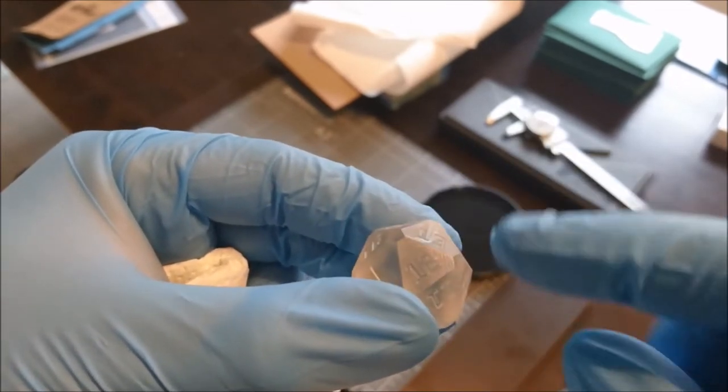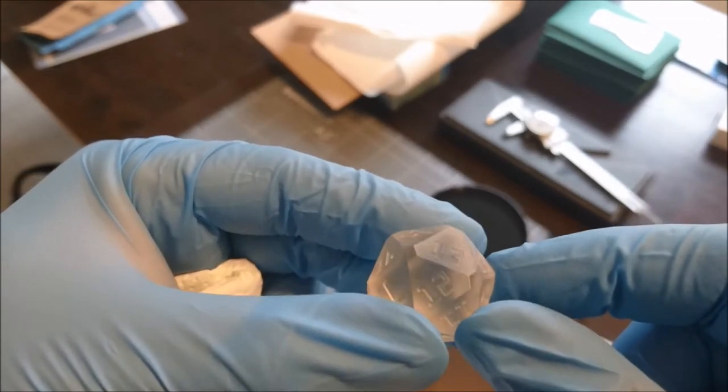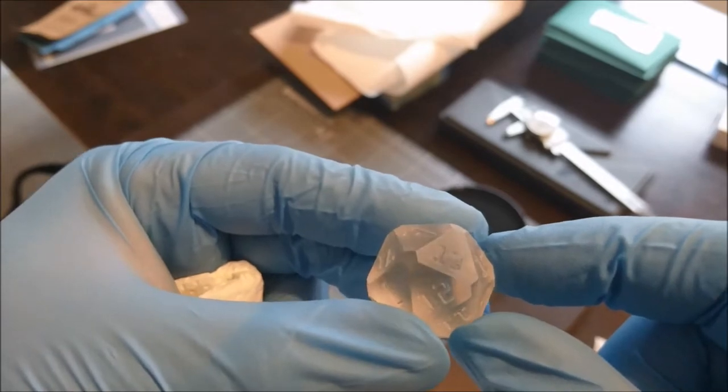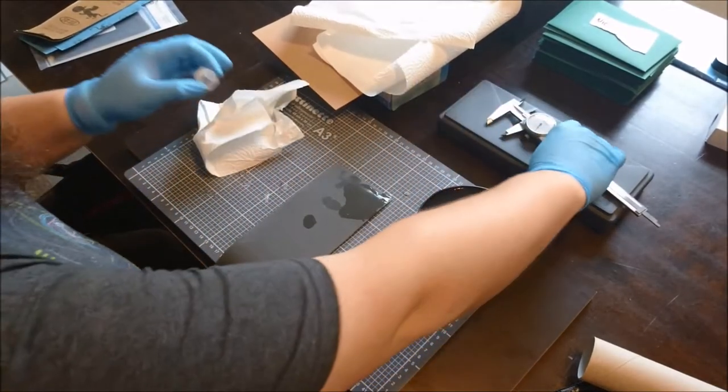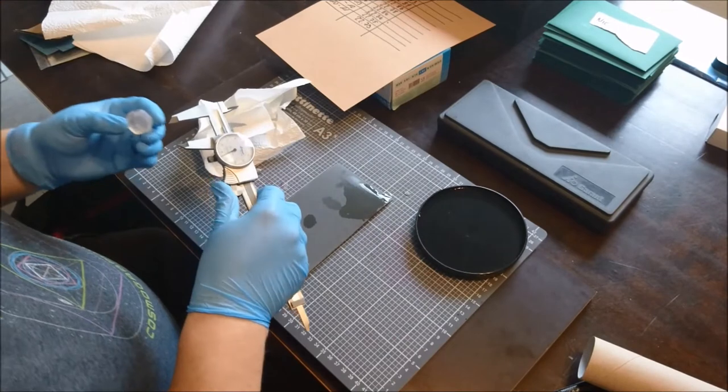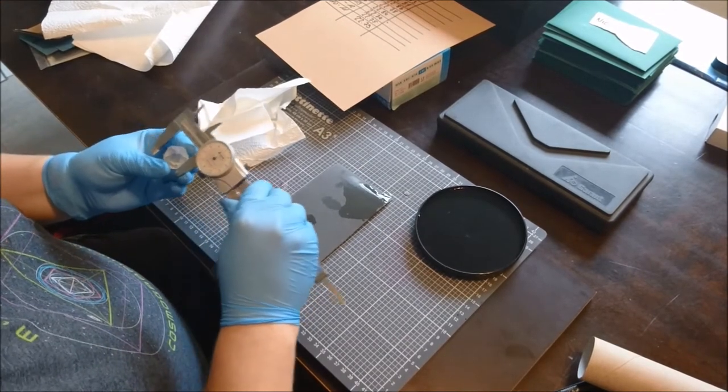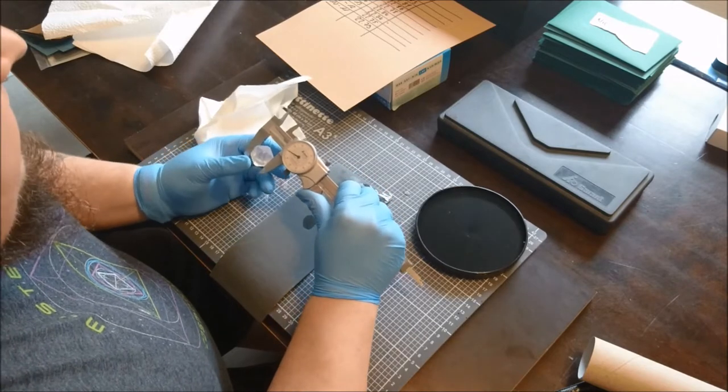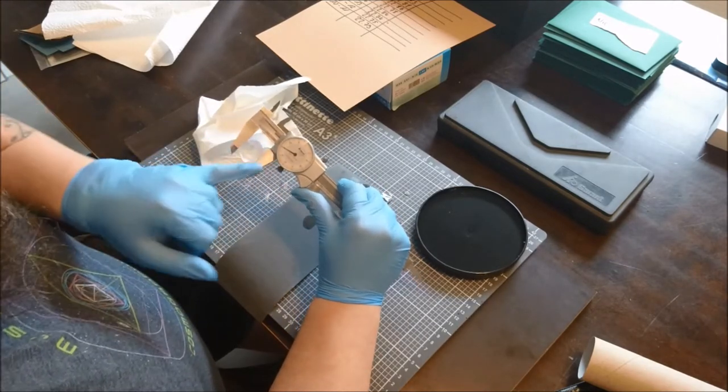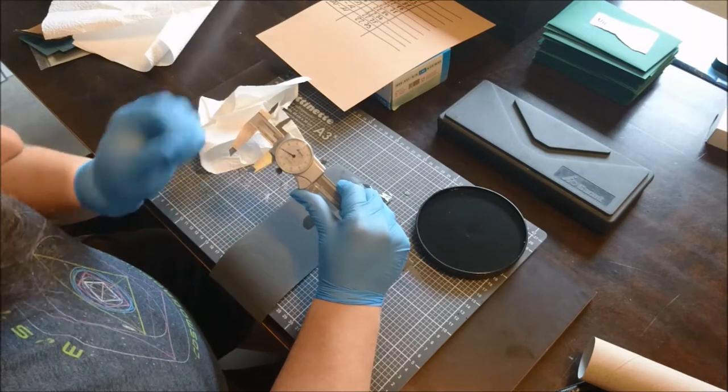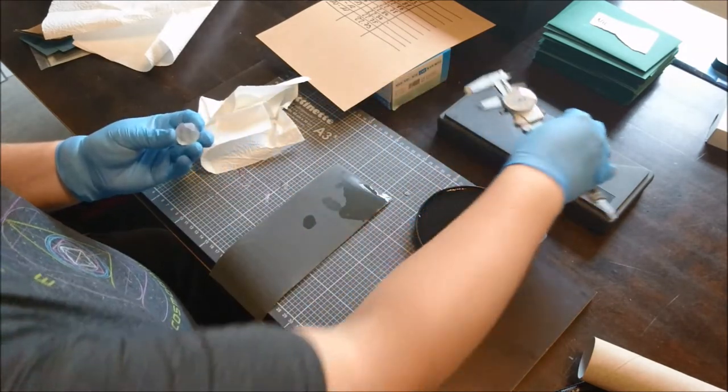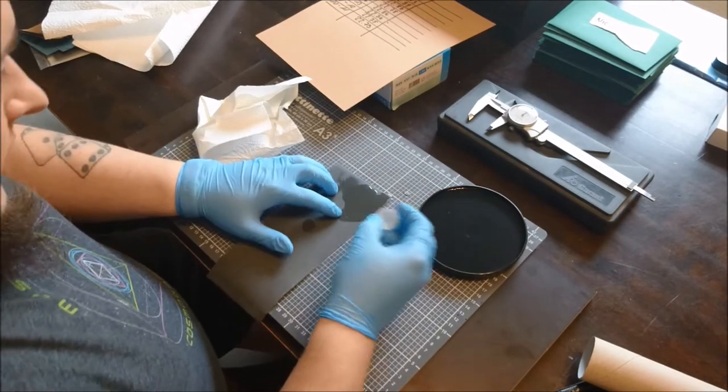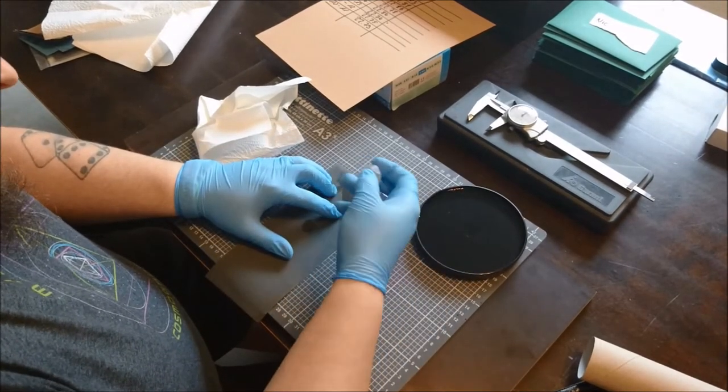Now I measure them again to see how much I took off this surface. So I took off 0.04 because we are now at 22.7. So I tried to get the same amount off of the other side.